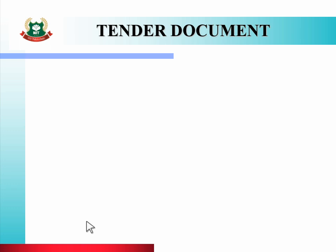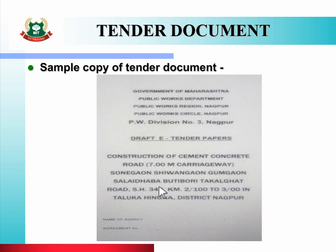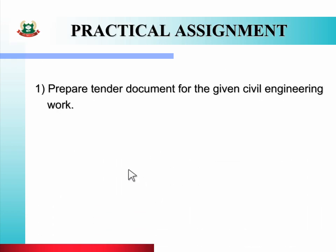Now you will see the sample copy of the tender document. In which the name of work is construction of cement concrete road. You have to prepare the tender document related to this work. According to the list of tender documents, you have to write complete detailed information for this work. (काम से रिलेटेड टेंडर डॉकुमेंट प्रिपेर करना है, टेंडर डॉकुमेंट की लिस्ट के हिसाब से आपको इस वर्क के लिए पूरी डिटेल इन्फॉर्मेशन लिखना है।)